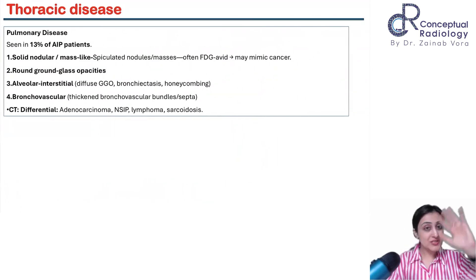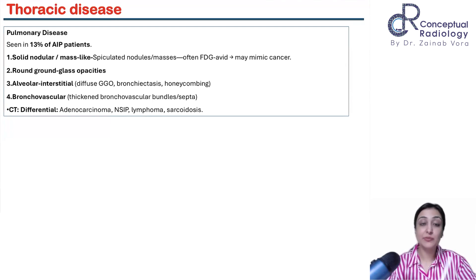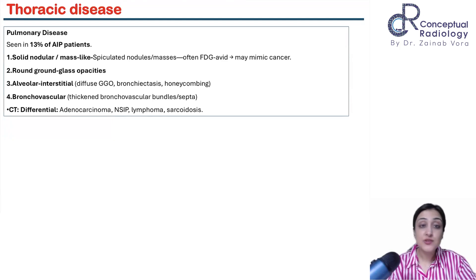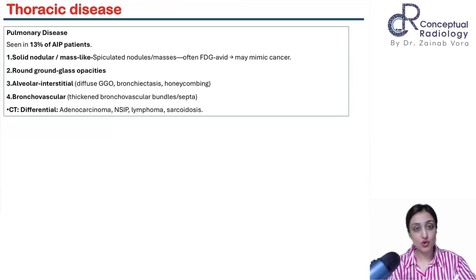Summary of head and neck: six headings — orbital involvement, parotid gland involvement, nasopharynx and skull base, pachymeningitis, and pituitary stalk thickening.